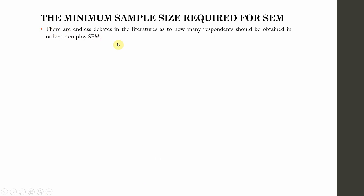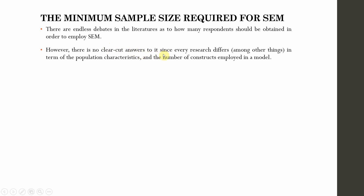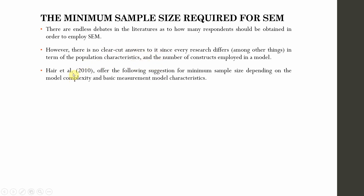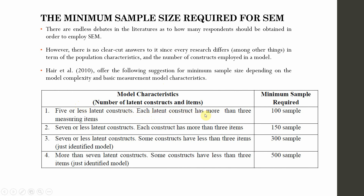What is the minimum sample size required for SEM? There are endless debates and no clear-cut answers. However, the following suggestions are offered for minimum sample size depending on model complexity: if you have 5 or fewer constructs, each with more than 3 measuring items, you need a sample of 100. For 7 or fewer latent constructs each with more than 3 items, use 150. For 7 or fewer constructs where some have fewer than 3 items, 300 is sufficient for a just-identified model. For more than 7 latent constructs where some have fewer than 3 items, a sample size of 500 is needed.